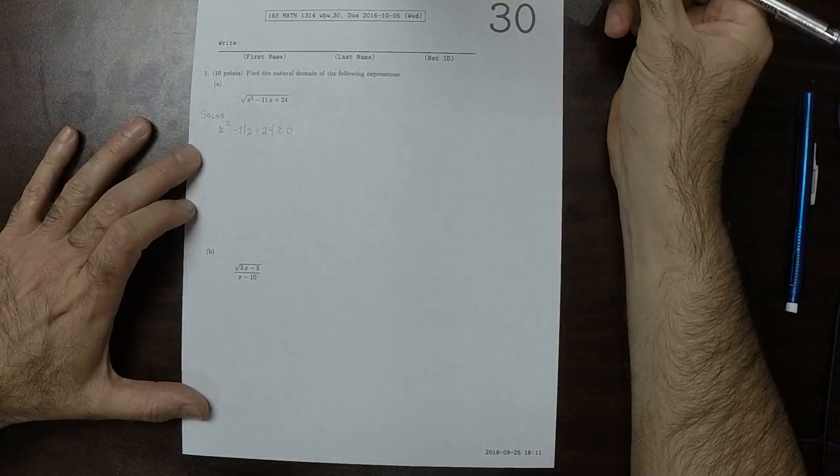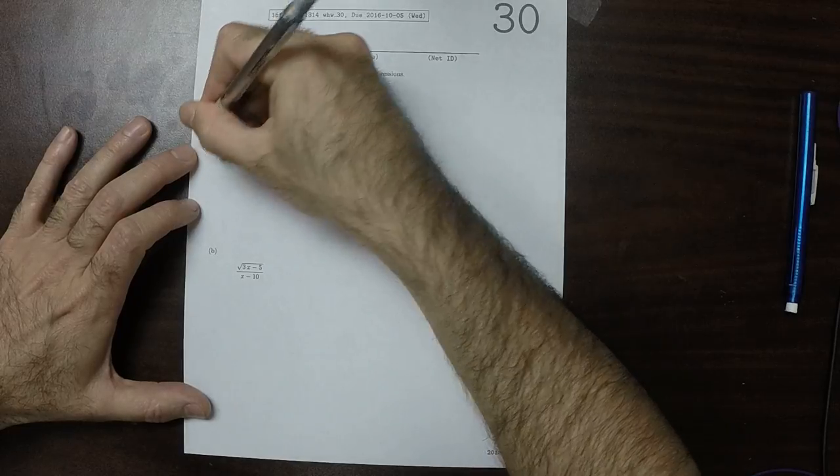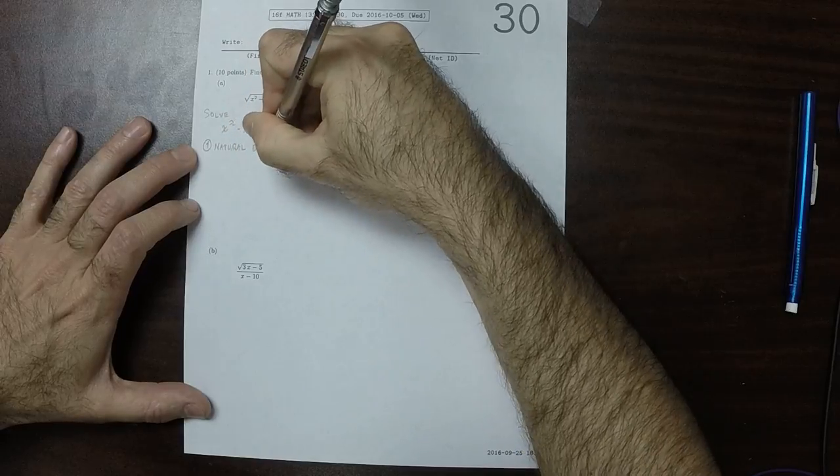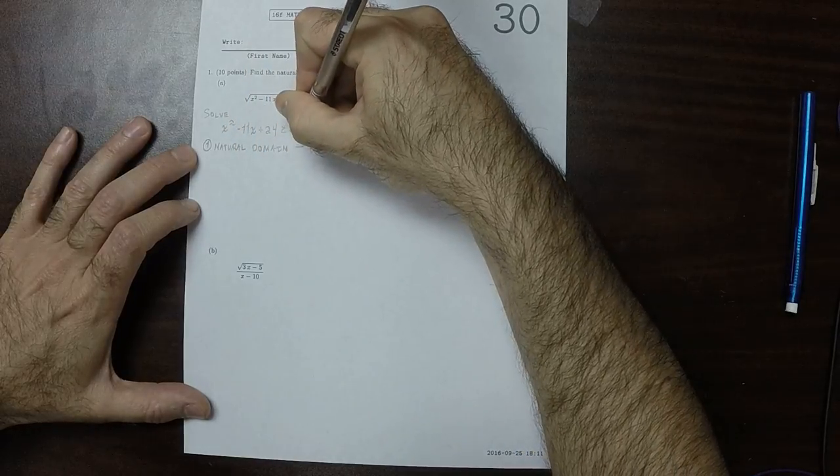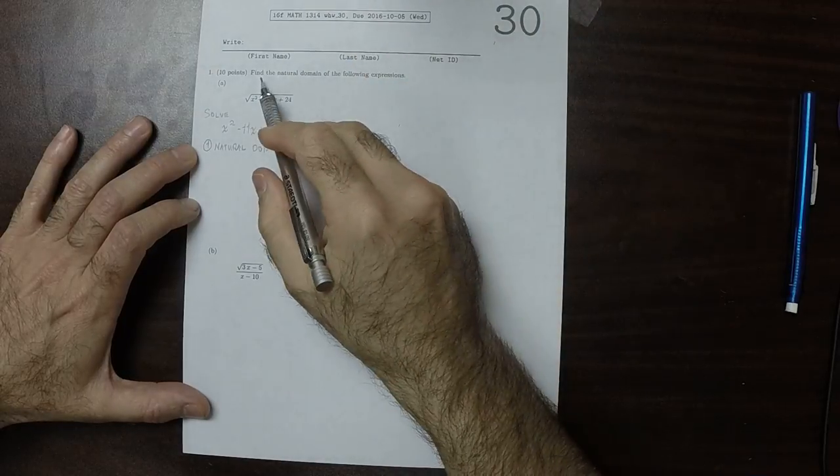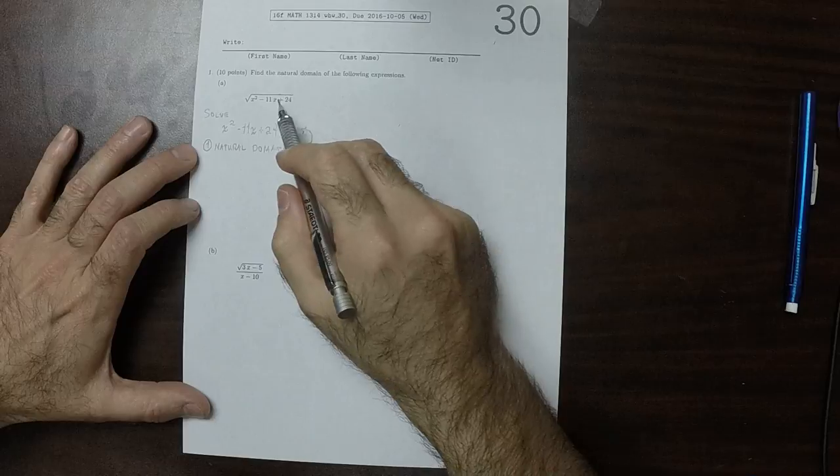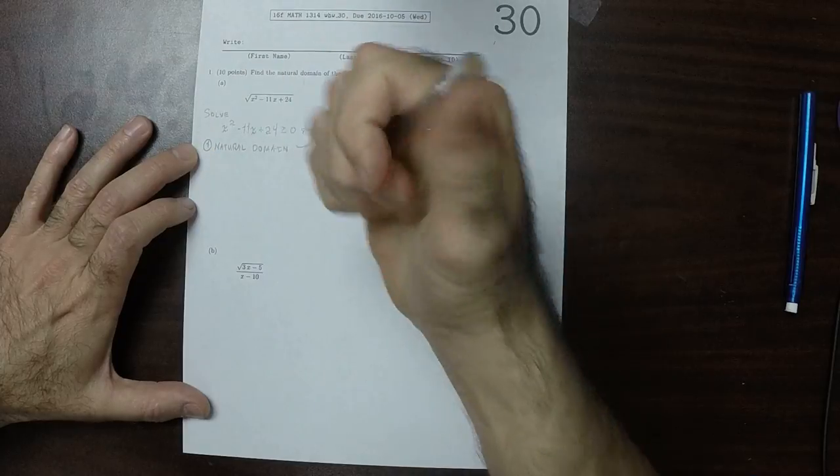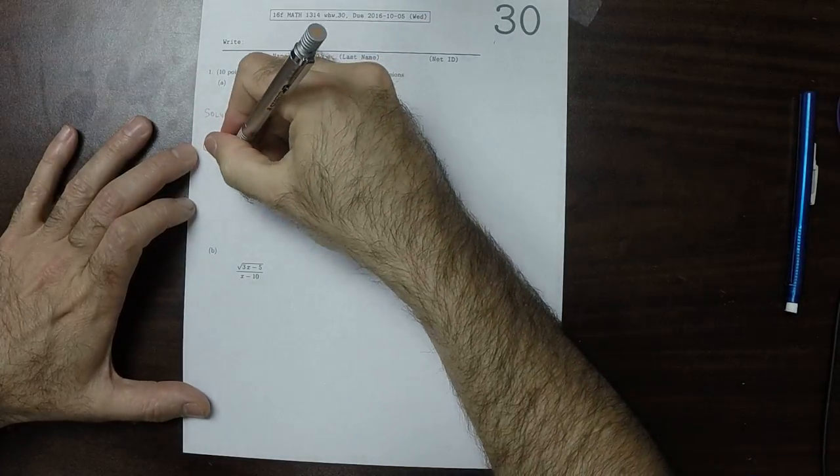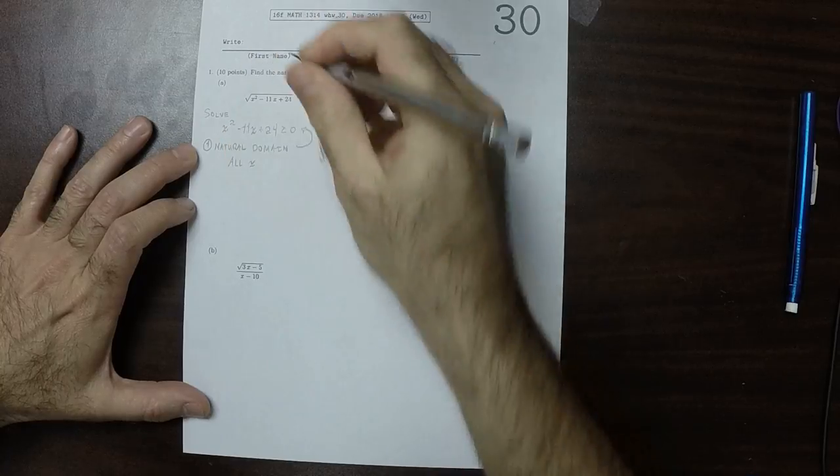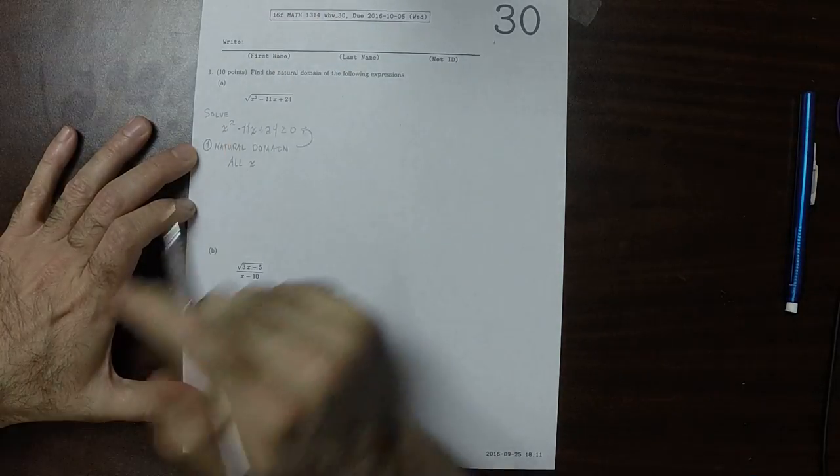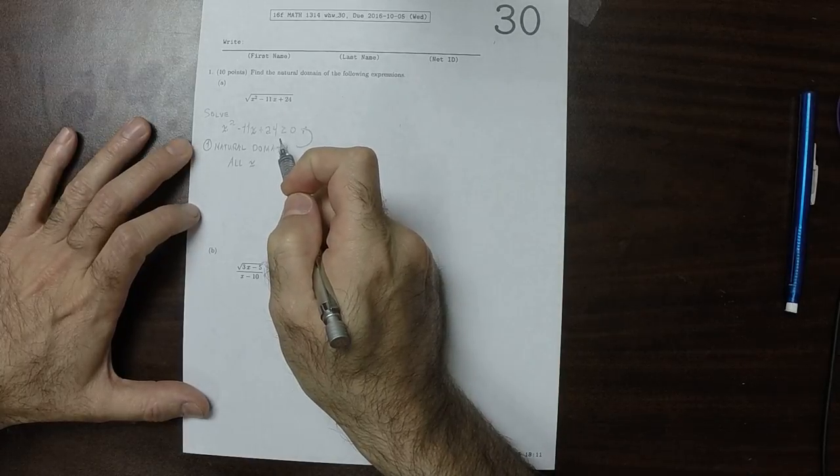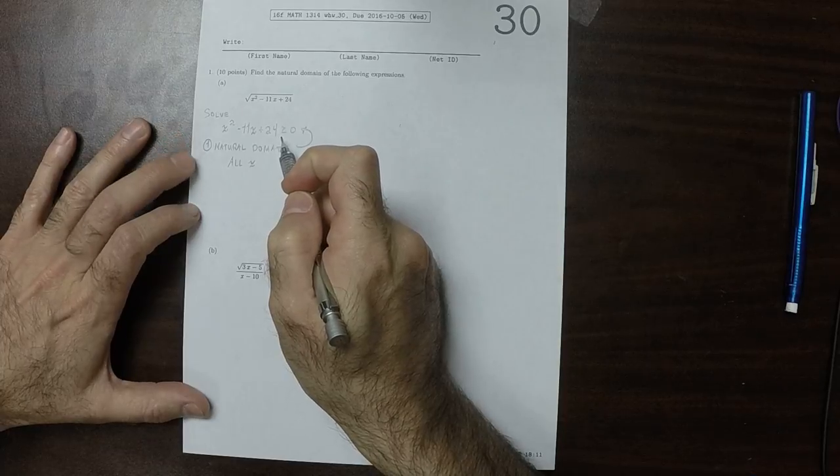So we need to solve this. The first step is to ask what is the natural domain of the inequality. It's interesting that in finding the natural domain of this expression, we have to first find the natural domain of this inequality. Well this inequality is defined for all x. You can plug any x into this inequality that you want. That doesn't mean it will be true for any value of x, but the inequality can be evaluated at any value of x.